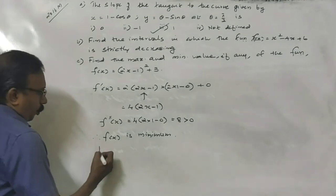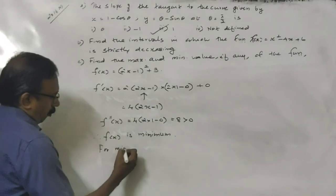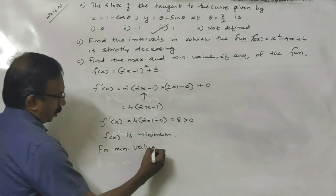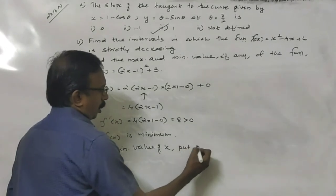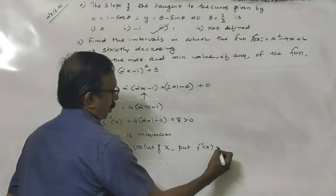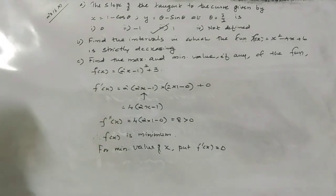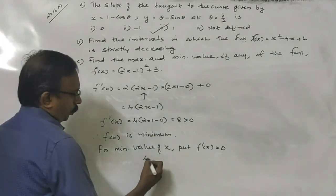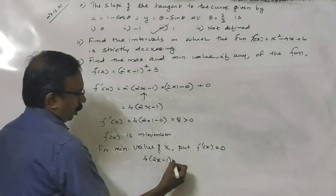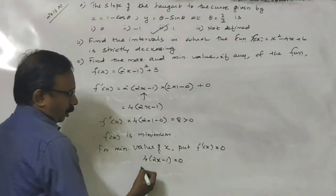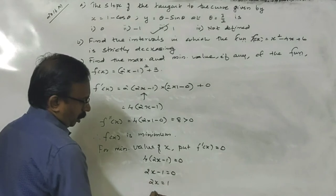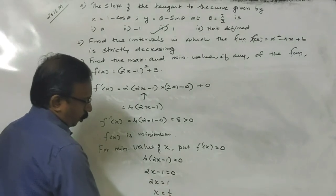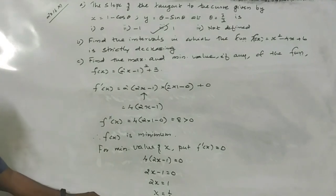For the minimum value, we find the turning point by setting f'(x) equal to 0. So 4 into (2x minus 1) equals 0. Since 4 is not zero, 2x minus 1 equals 0, giving x equals 1/2.